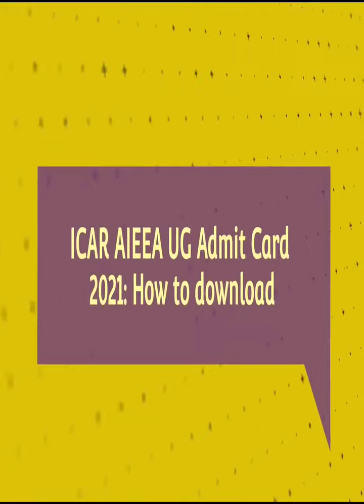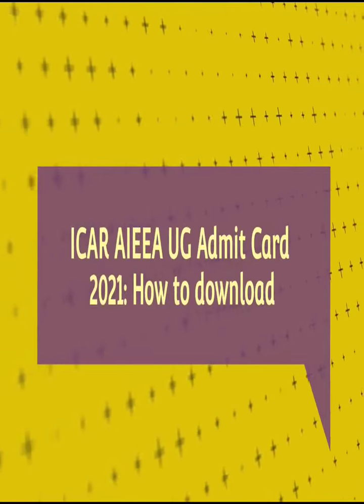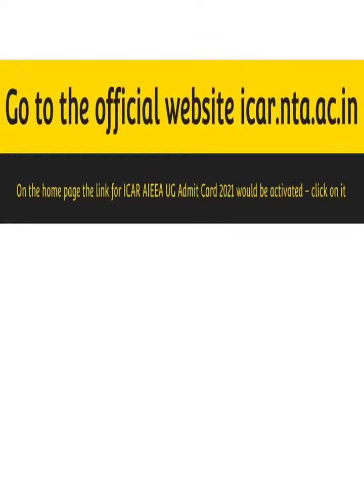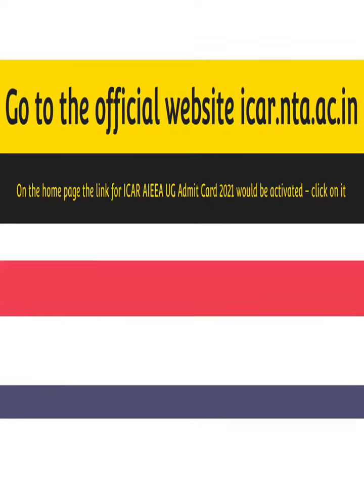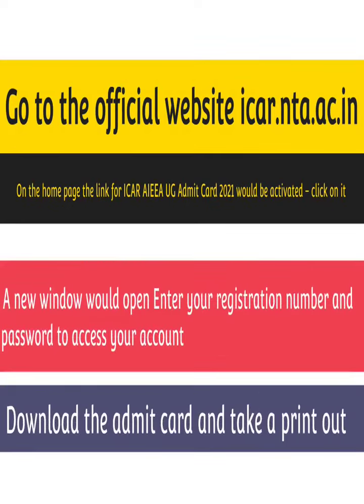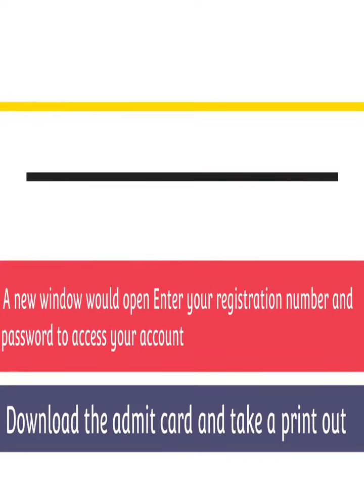How to Download ICAR AIEEA UG Admit Card 2021: Go to the official website icar.nta.ac.in. On the homepage, the link for ICAR AIEEA UG Admit Card 2021 would be activated — click on it. A new window would open. Enter your registration number and password to access your account. Download the Admit Card and take a printout.